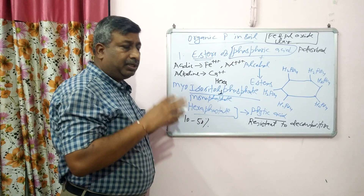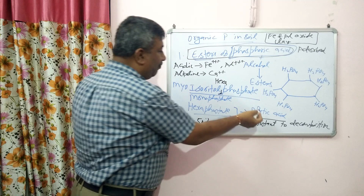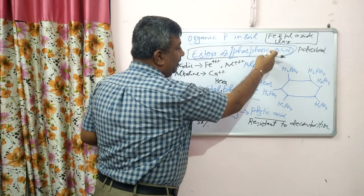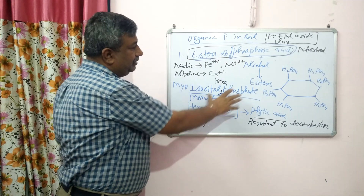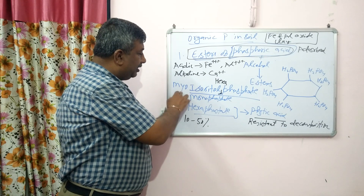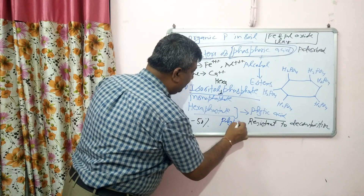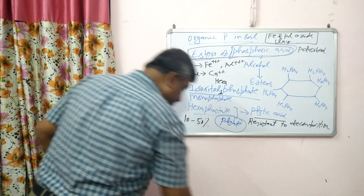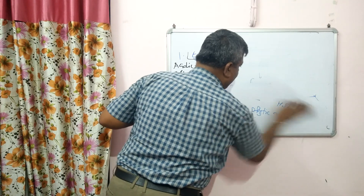Phytic acid (inositol hexaphosphate) is an ester of phosphoric acid — it is the product of the acid-alcohol reaction where inositol is the alcohol. It is also called phytate when it forms a complex with minerals. Phytic acid is tightly adsorbed to clay particles such as montmorillonite and also adsorbed on iron and aluminium oxides, so it is not soluble. This is the problem with phytic acid — it is the major organic form of phosphorus present in soil.